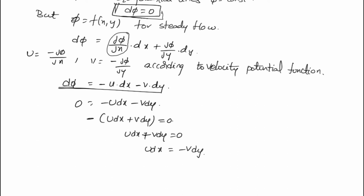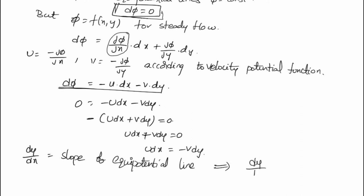Now, if we want to find out the slope, represented by dy/dx, the slope of equipotential lines is dy/dx = -u/v.